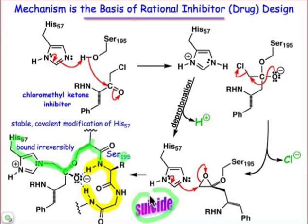And so we call this a suicide inhibitor because the inhibitor basically sends the enzyme down its normal pathway until there's a new mode of reaction that has to kick in, since we've blocked the normal mode of reaction.